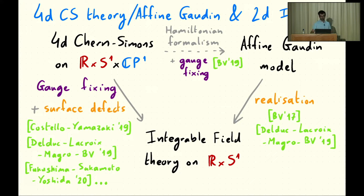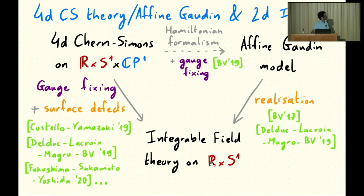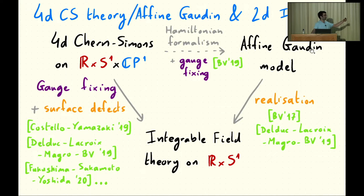To remind you: in 4D Chern-Simons theory on the cylinder times CP1 (which plays the role of the spectral plane), you introduce surface defects along the cylinder at fixed points in CP1, impose boundary conditions on your gauge field at the surface defects, and after gauge fixing, you find that the gauge field of the 4D Chern-Simons theory becomes the Lax matrix of the integrable field theory in two dimensions.